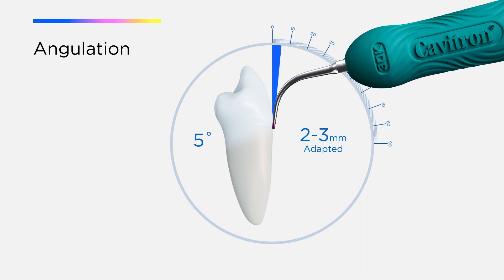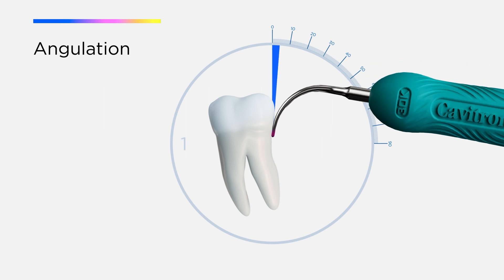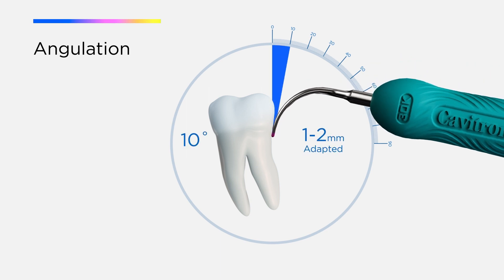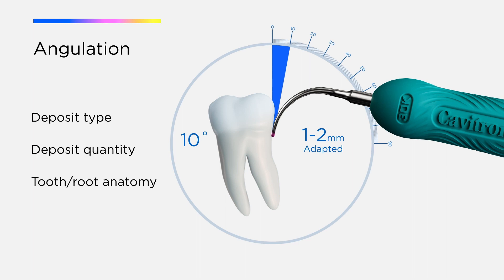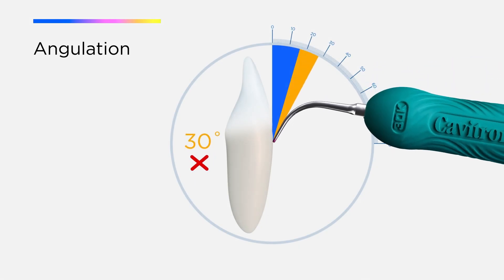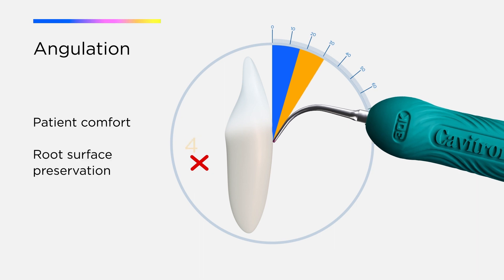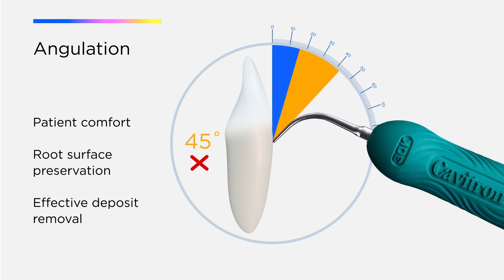Adaptation of 2 to 3 millimeters of the active area is most common. Adapting 1 millimeter or 4 millimeters of the active tip area may be needed in specific cases, and is dependent on deposit type, deposit quantity, and tooth or root anatomy. Implementing an angulation beyond 15 degrees may impact patient comfort, root surface preservation, and effective removal of deposit.